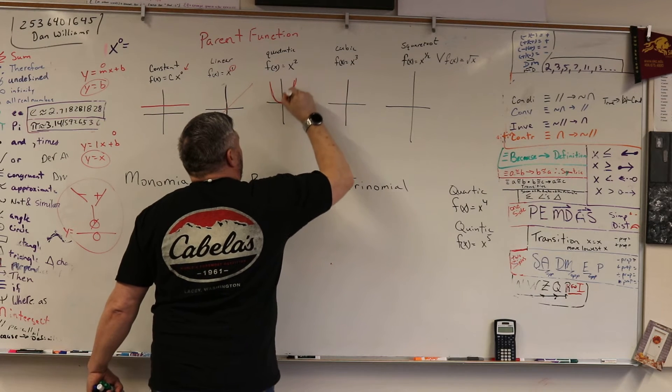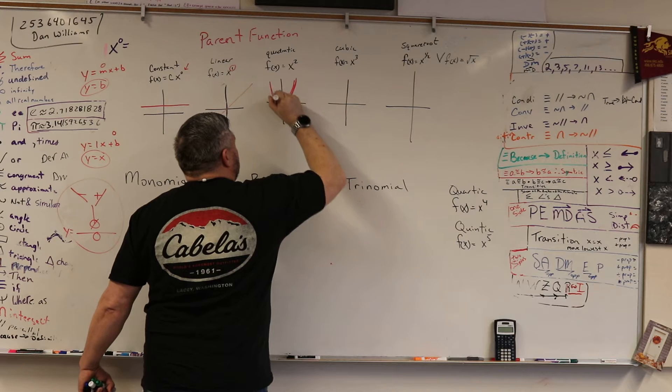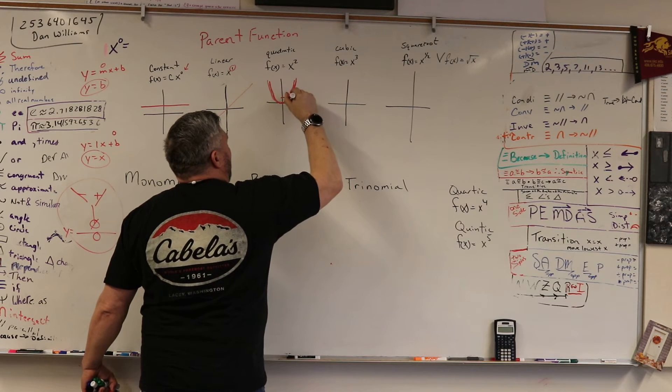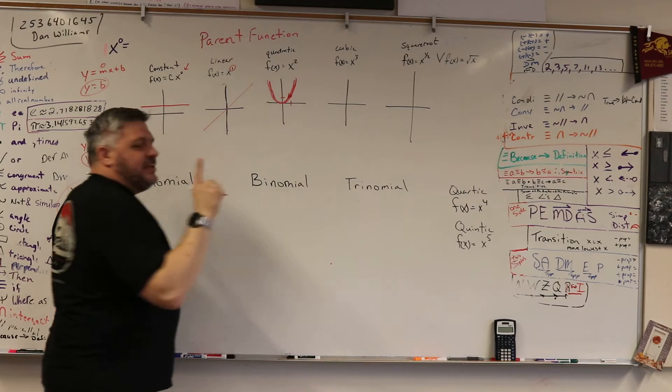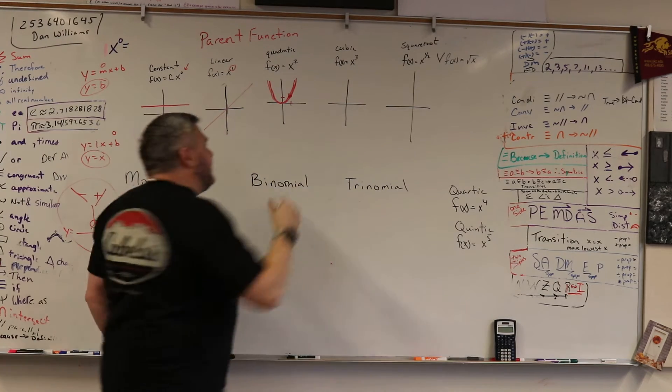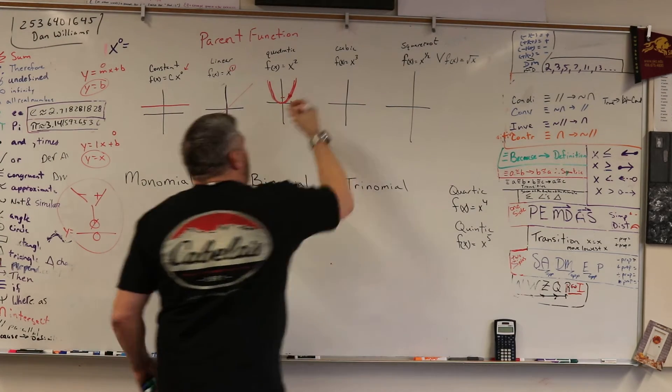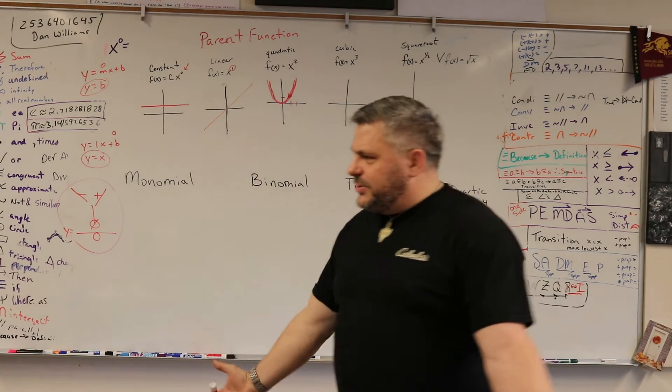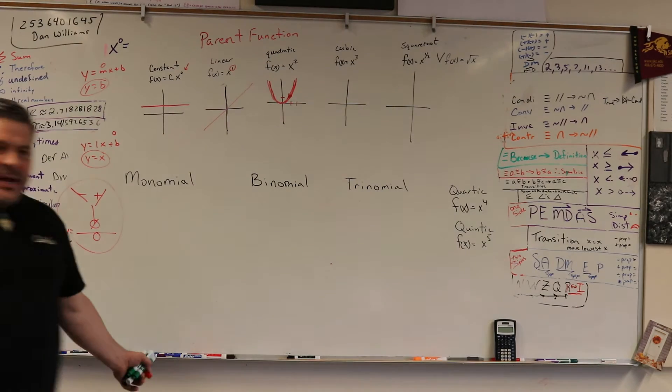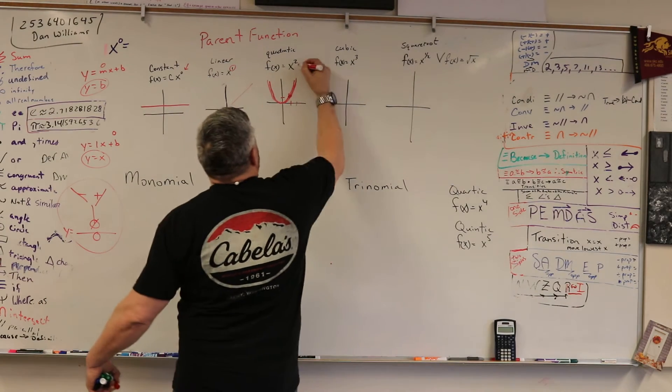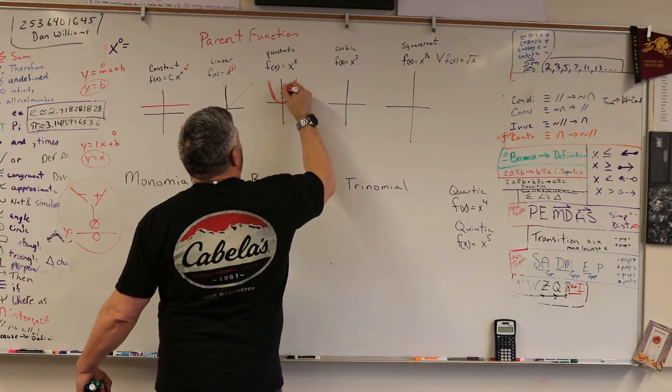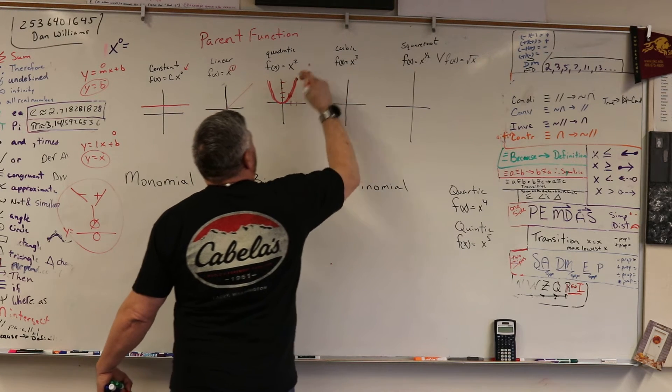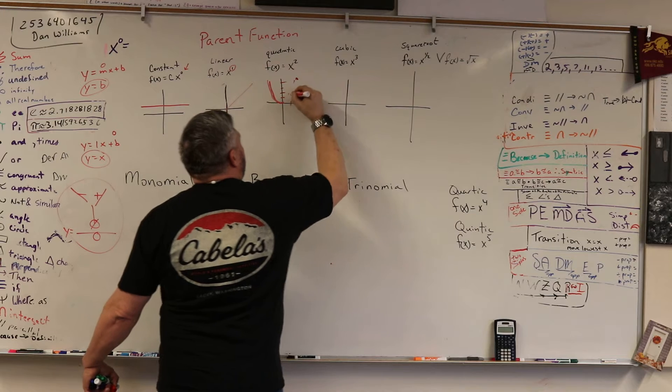And what a quadratic looks like is like this. But more importantly, when I teach this to students, what they don't realize is that at one and one, we have a point. But what happens at two? At two, what's two squared? Everybody knows two squared, right? Two times two? Four, right? So it goes up to four. One, two, three, four. And so it's way up here.